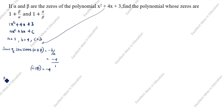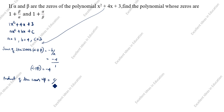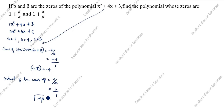Next, the product of the zeros. Alpha times beta is equal to c by a. The value of c is 3 and a is 1, so alpha beta is equal to 3.